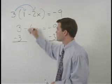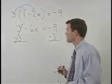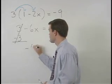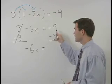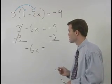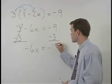On the left, 3 minus 3 cancels, and we're left with negative 6x. On the right, negative 9 minus 3 simplifies to negative 12.